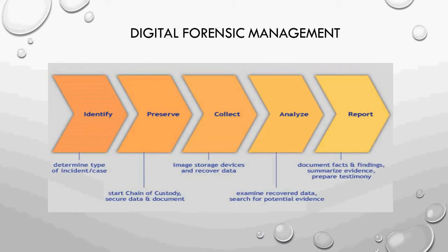Moving on, there are various steps in digital forensics. First is identification of the case — whether it involves source code theft, stolen data, or altered data. Second, we need to preserve all documents and secure all data and evidence at the crime site. Third, we collect images of storage devices and recover all deleted data. Next, we analyze the recovered data to find possible important evidence. Finally, we produce a report or documentation of everything done from start to end, which can be stored as a case study.